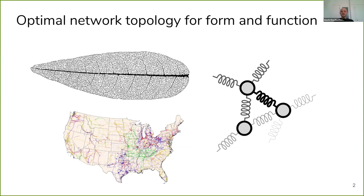One example is the venation network of plant leaves, which has the function of transporting nutrients and water throughout the leaf blade, but also the function to keep the leaf blade flat and rigid. Second example is the electrical power grid of the United States, which has the function of delivering electrical power to consumers, but also remaining synchronized and stable — especially now with a lot of feed-in from renewable power sources. The final example is a balls-and-springs network, a theoretical abstract model for mechanical metamaterials, which can also be designed to have function. I'm interested in the interconnection between the form of these networks, their function, and the idea that all of these networks are optimized for something.